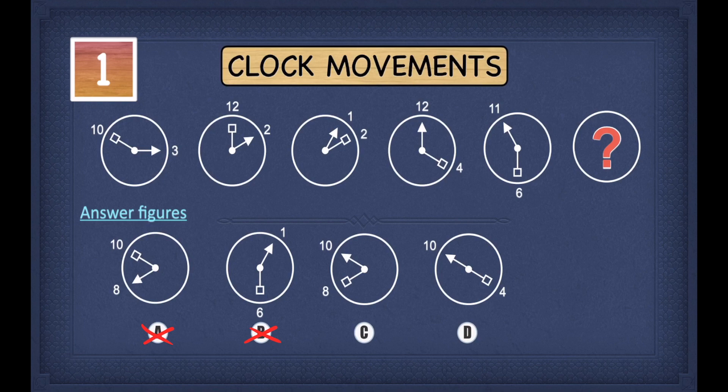So this means, in our answer, the square must point towards eight. In C, the square points towards eight, whereas in D, it points towards four. And therefore, we can cross out D, which means our answer will be C.